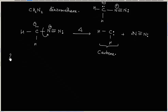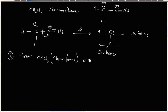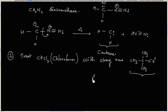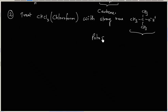Another way to generate carbene is to treat CHCl3, that is chloroform, with a strong base like potassium tert-butoxide. This molecule is potassium tert-butoxide. When chloroform is treated with potassium tert-butoxide, it generates a carbene.